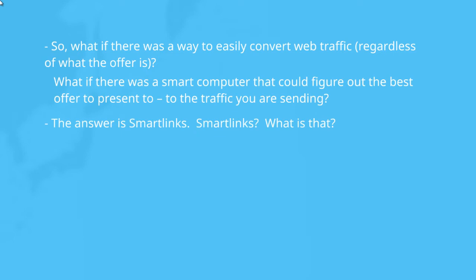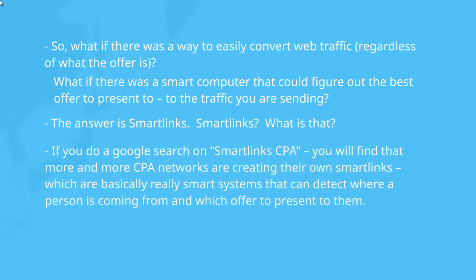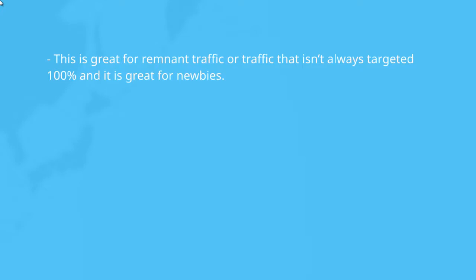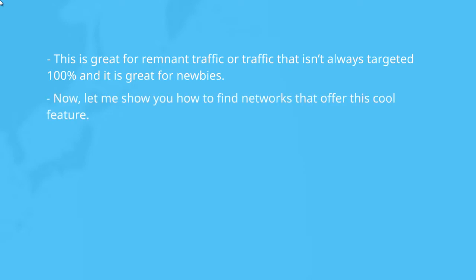The smart offer network might have maybe a hundred different offers, and an algorithm determines which best offer to present. This is what we call smart links. If you do a Google search for 'smart links CPA,' you'll find that more and more CPA networks are creating their own smart link systems — really smart systems that figure out where the person is coming from and which offer to show them. We've recently started promoting smart links and found we actually get more conversions with a smart link versus a specific offer, which is really interesting. This is especially great for remnant traffic or traffic that isn't 100% targeted, and it's great for newbies.